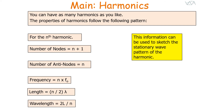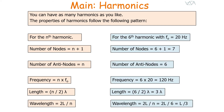For example, take the sixth harmonic with a first harmonic frequency of 20 hertz. The number of nodes would be six plus one, which equals seven. The number of anti-nodes would be six. The frequency at which the sixth harmonic forms is six times 20, which is 120 hertz.